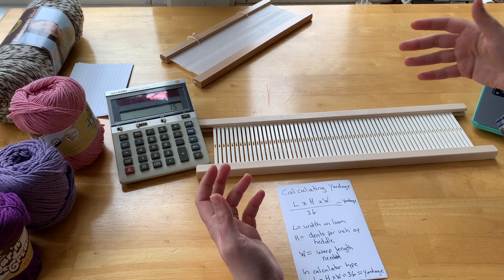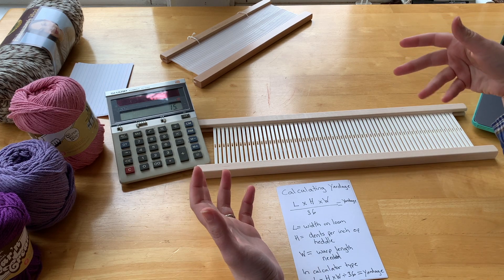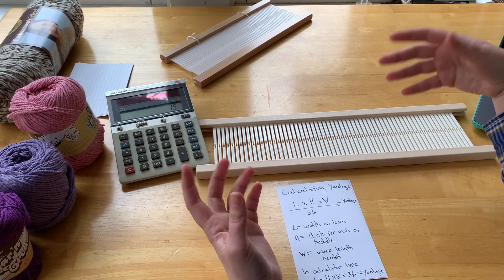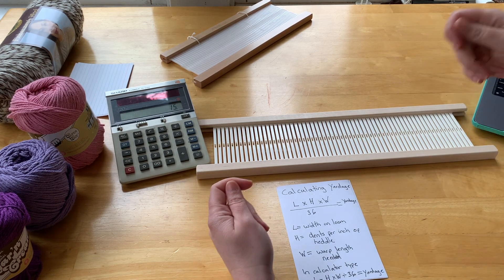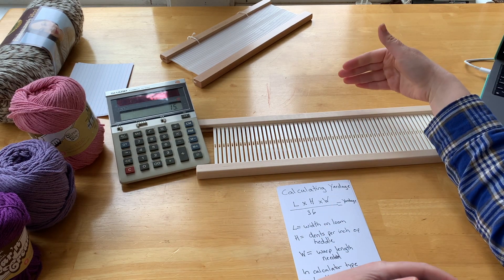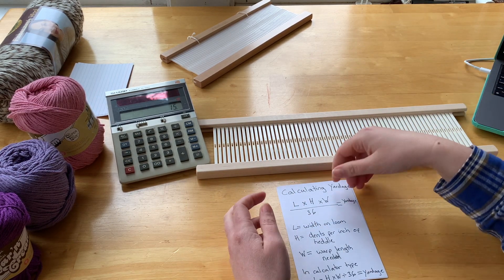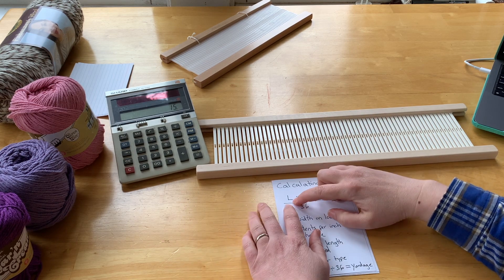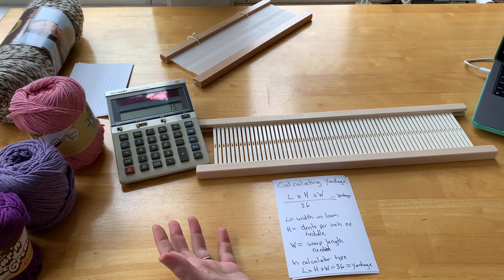So 30 inches is what we had. Then from there, I always like to add about 12 inches for waste, and that waste comes from the leftover yarn that you can't weave but you have to have to even get the yarn onto the loom and tie it onto the front and back beams.